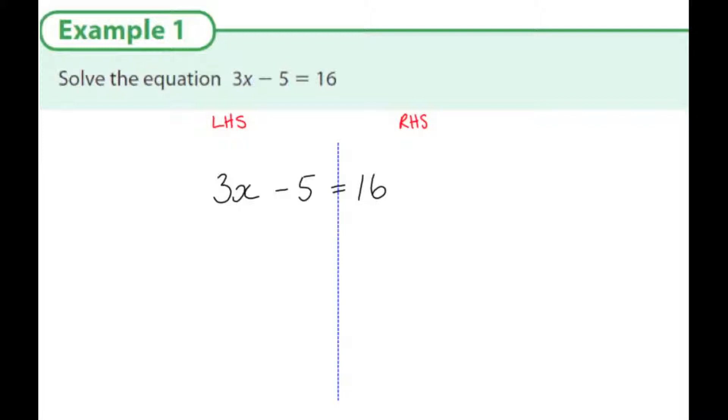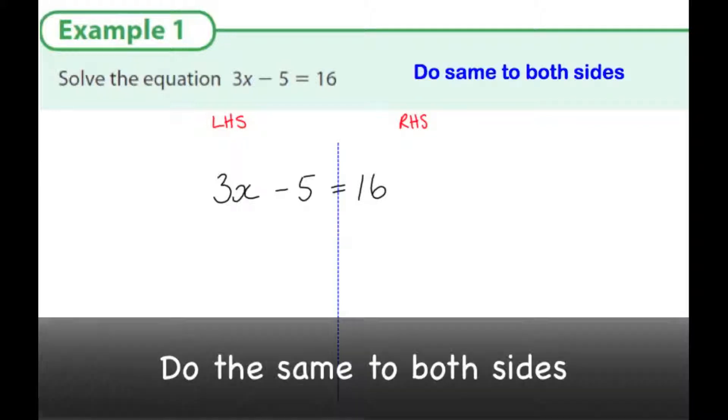The plan in solving this is that I would like at the end to have x on its own on the left-hand side and the numbers on the right-hand side. So I'll have x equals a number at the end. And to do this, we must always do the same to both sides.